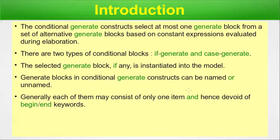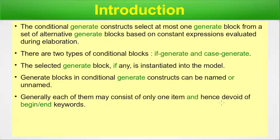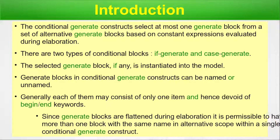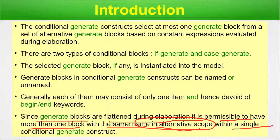Generally each block may consist of only one item and hence be devoid of begin and end keywords. This is good practice because overly complex code makes instantiation difficult. Typically, for one particular case we have a single statement — an instantiation of a gate, a user-defined module, or any digital circuit. Since generate blocks are flattened during elaboration, it is permissible to have more than one block with the same name in alternative scopes within a single conditional generate construct.